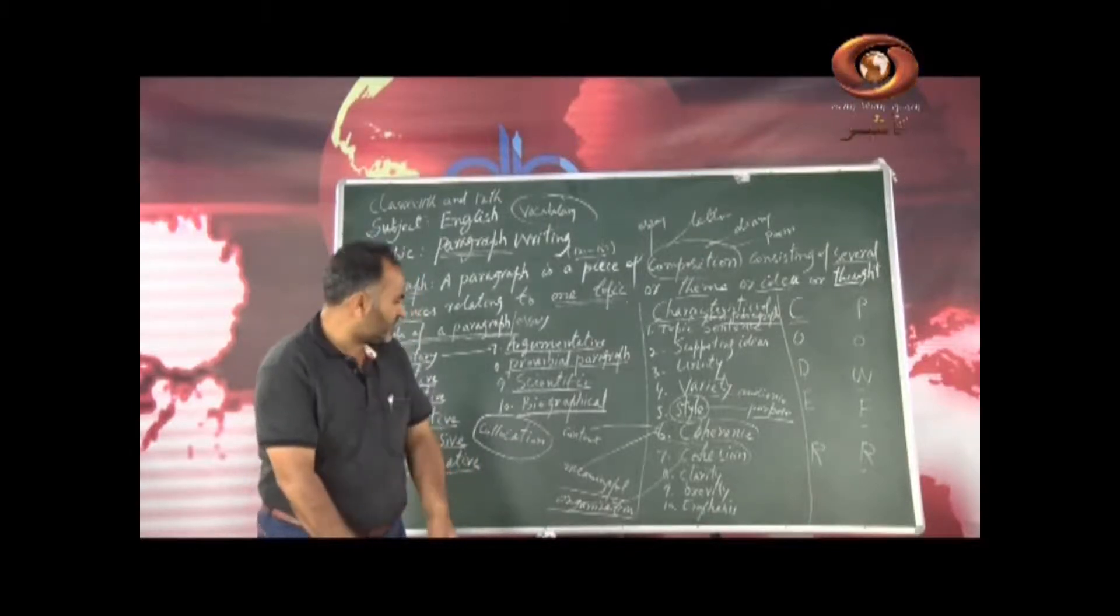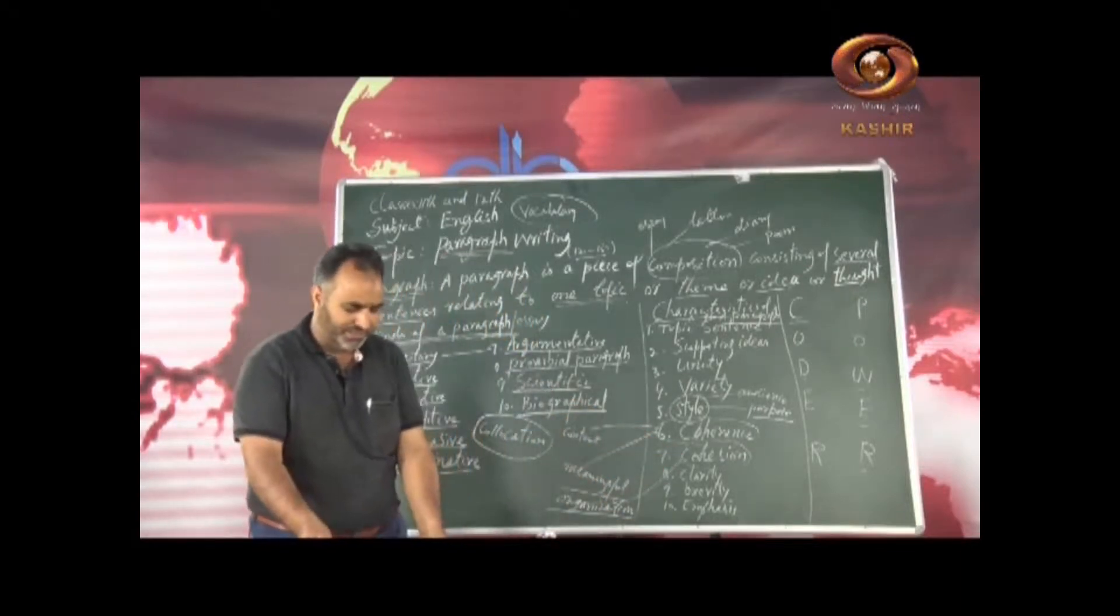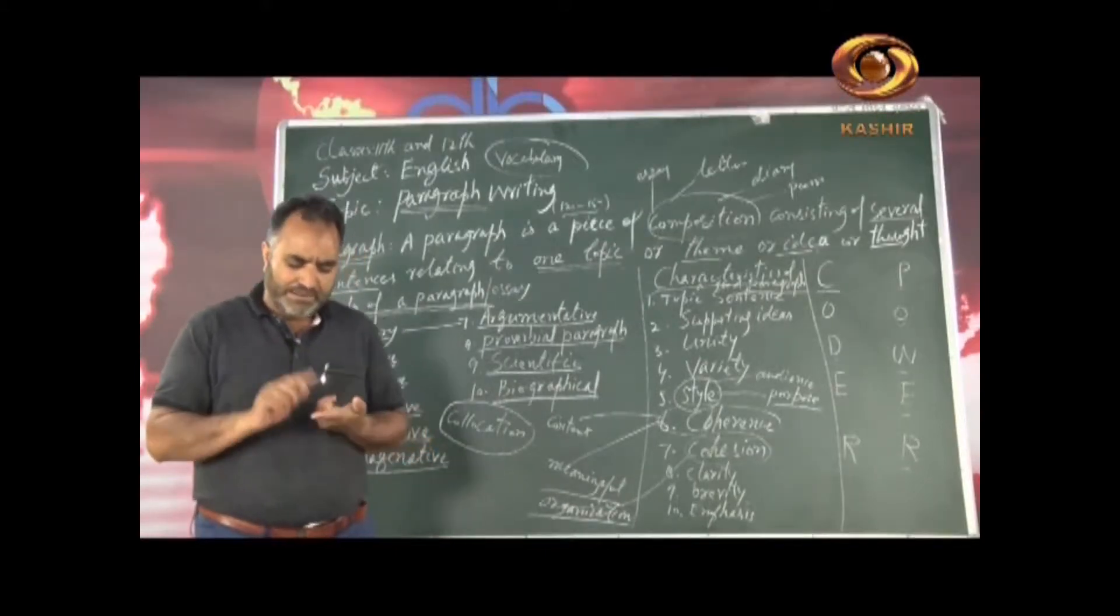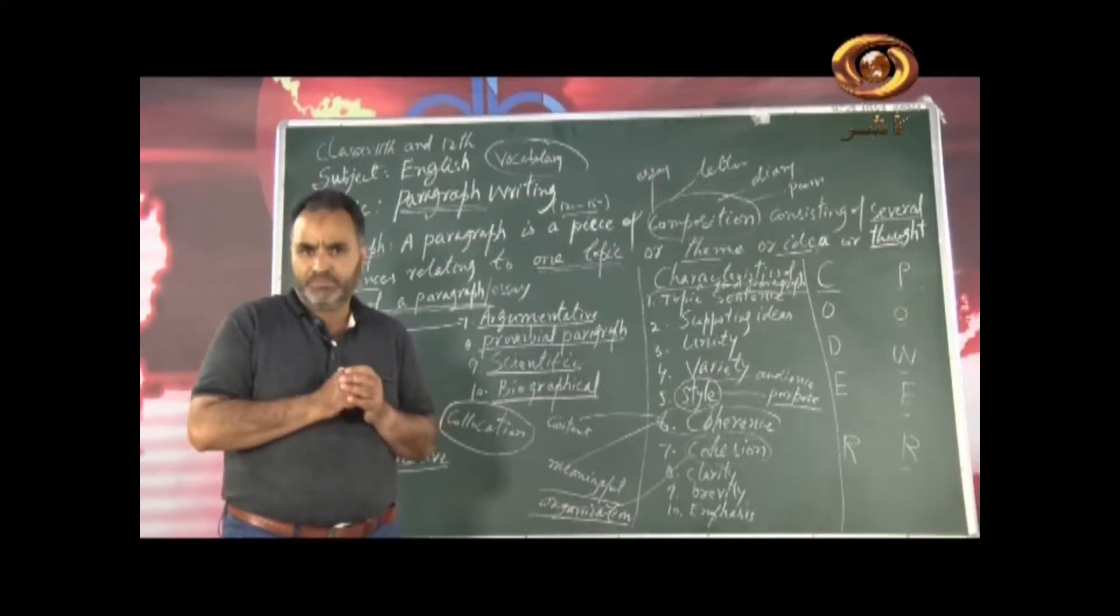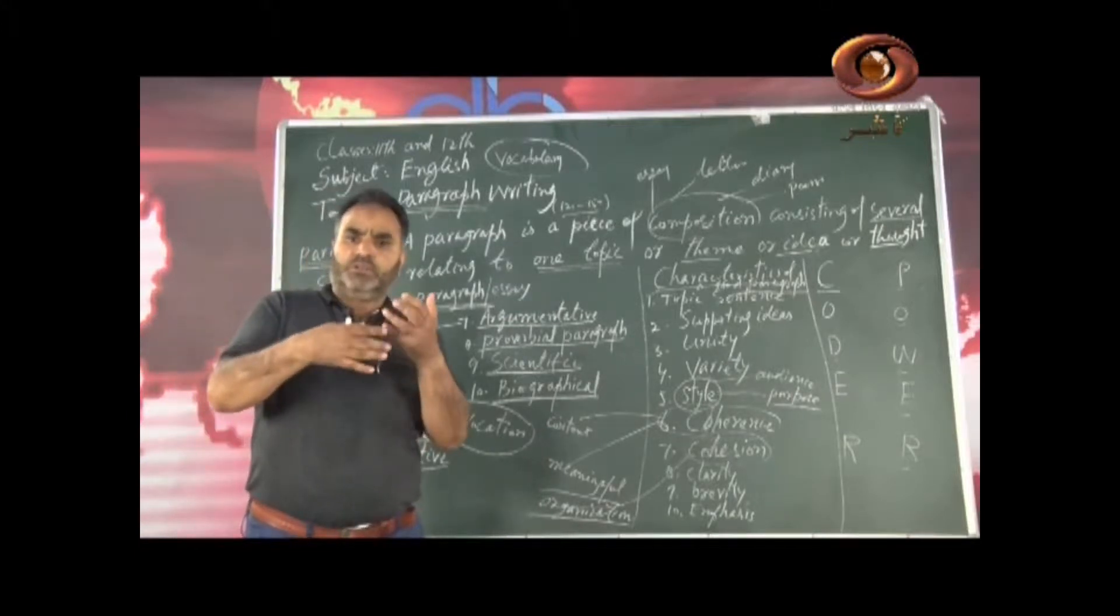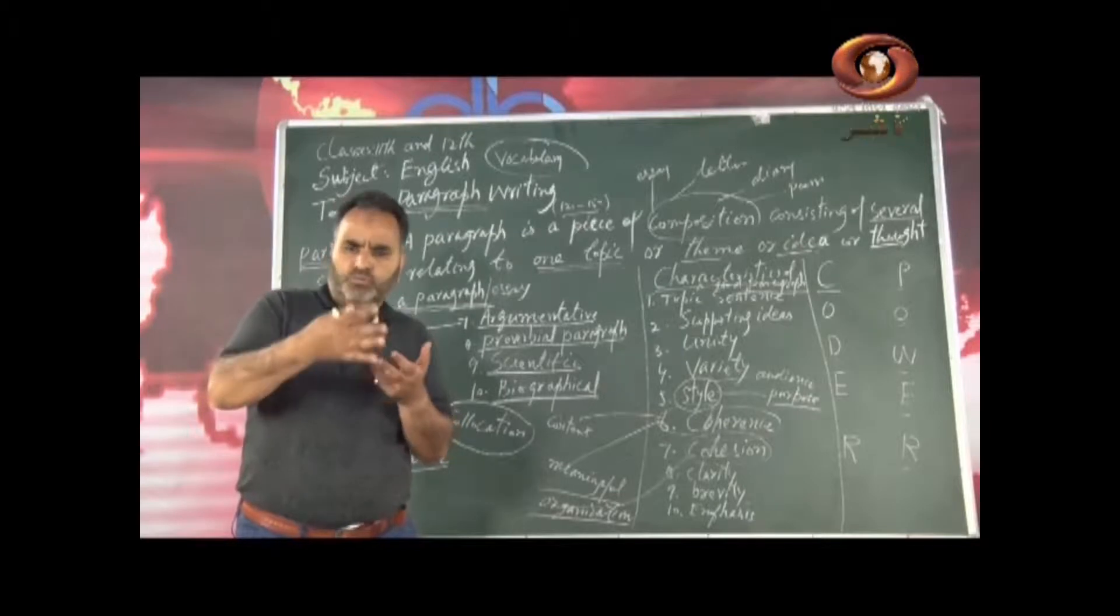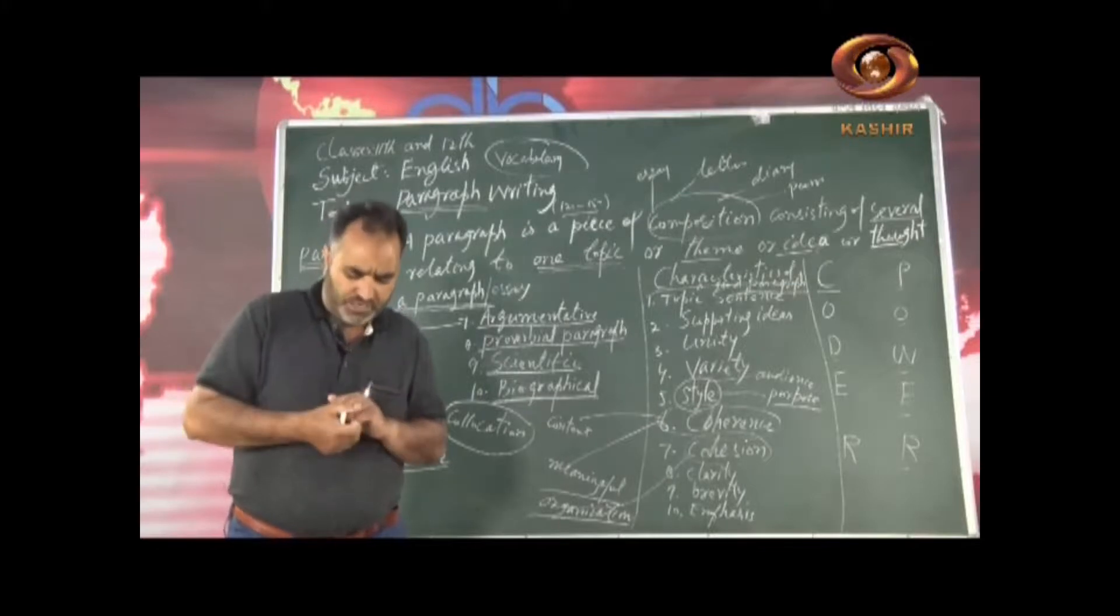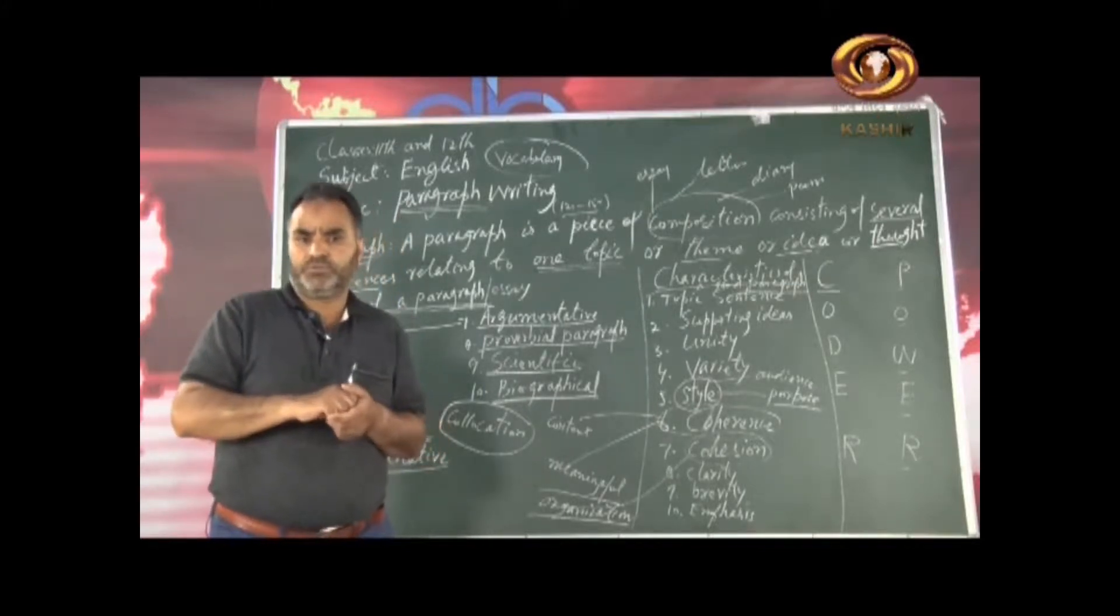Before that, let us also talk about again something about cohesion. Again, here for cohesion also you can also use grammatical and lexical linking devices, grammatical and lexical. Lexical you know, lexical means which have to do something with the content words - noun, verb, adjective, adverb, short forms, contract short forms, negative short forms. Negative short forms come under this and also demonstrative adjectives: this, that, these, those.